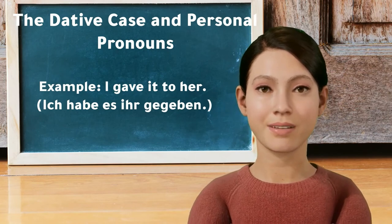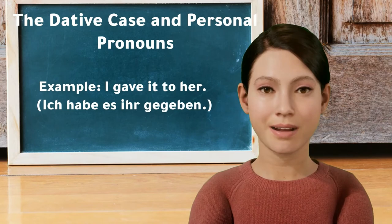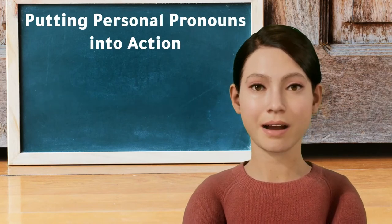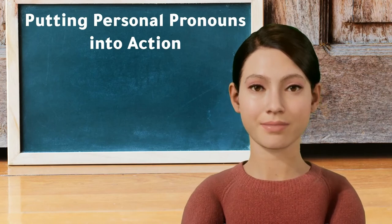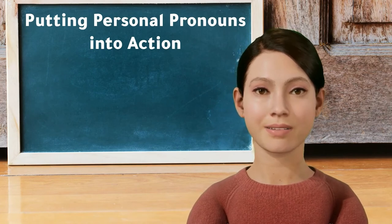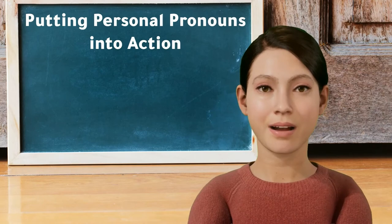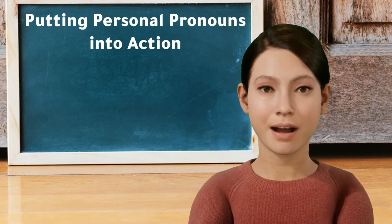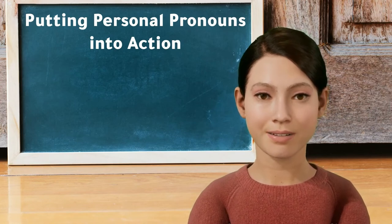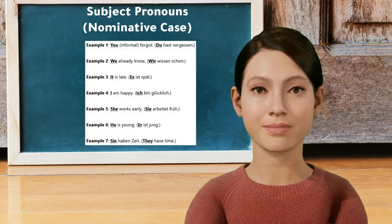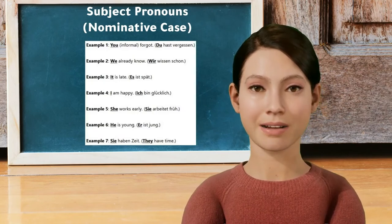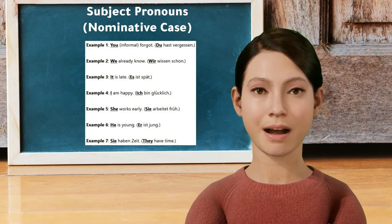You can replace dative case indirect objects with a corresponding dative pronoun from the table. Now it's time to start putting those personal pronouns into action. Let's look at some examples of personal pronouns and their roles in sentences. The different pronoun types are highlighted in orange for clarity on the website. First, let's look at subject pronouns in the nominative case.